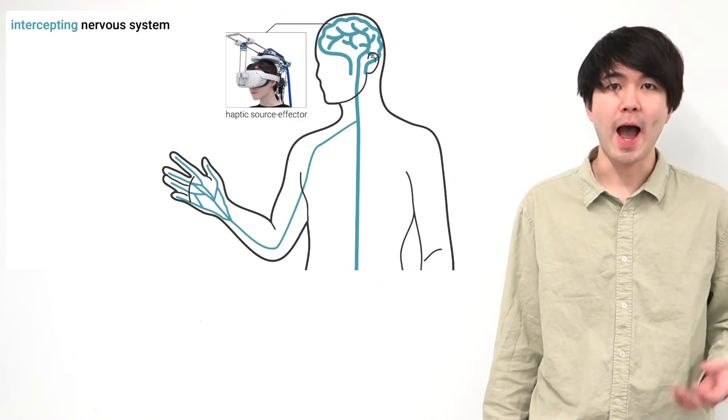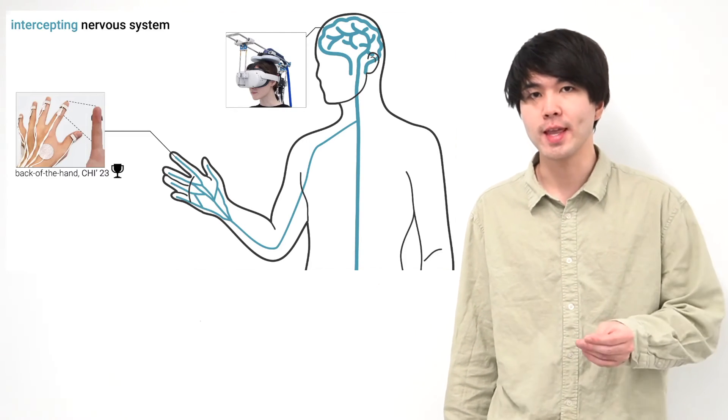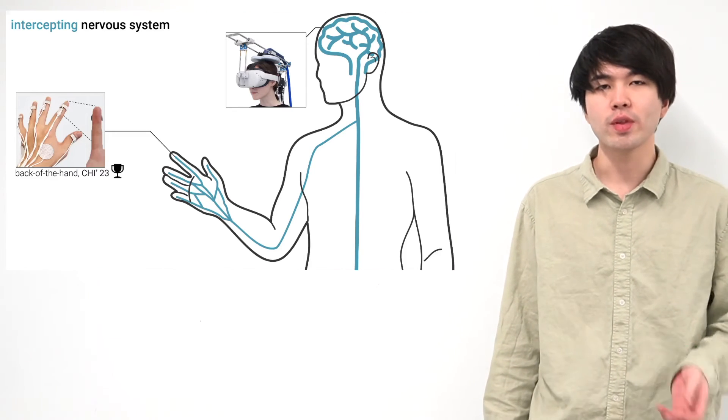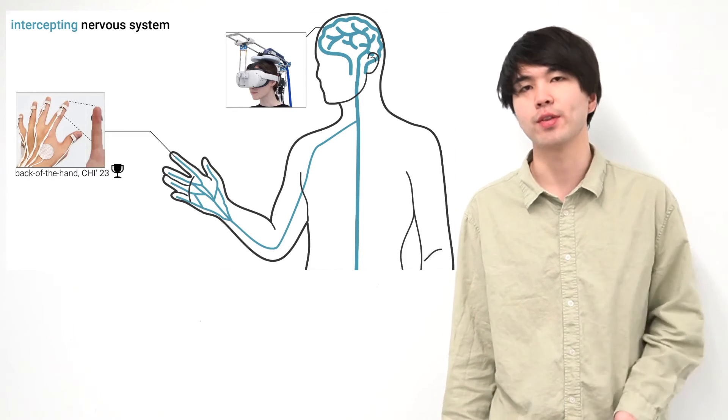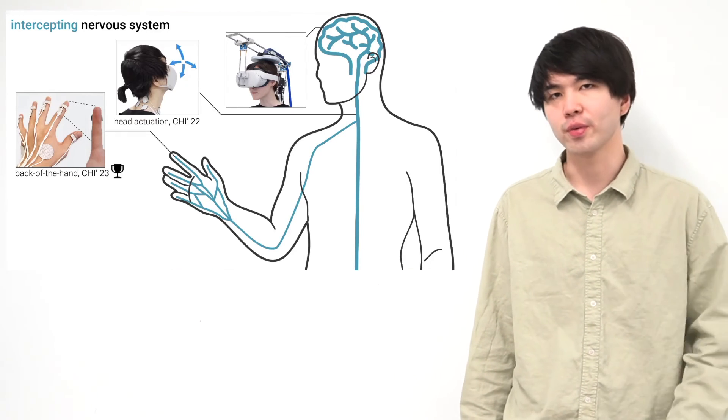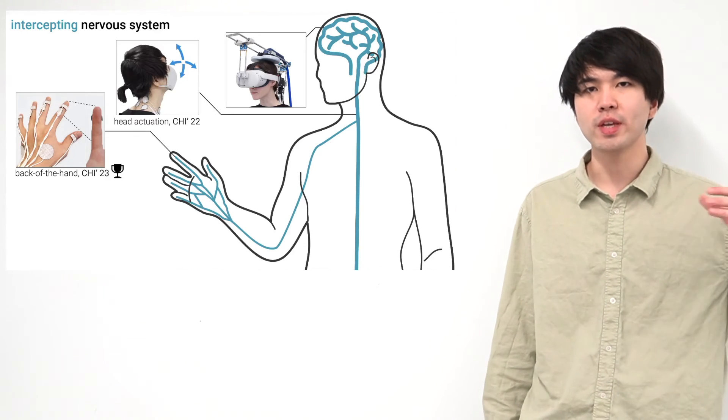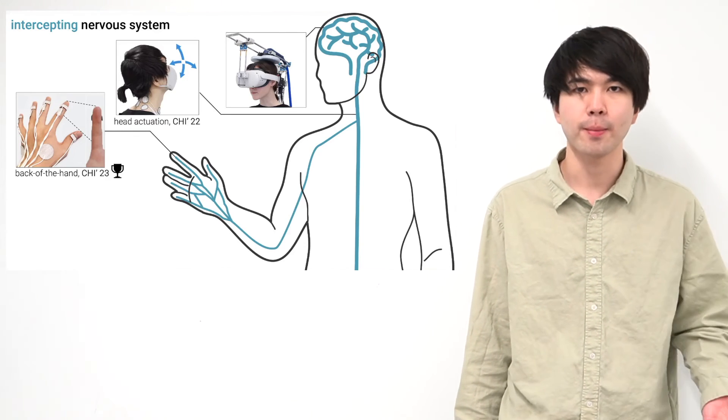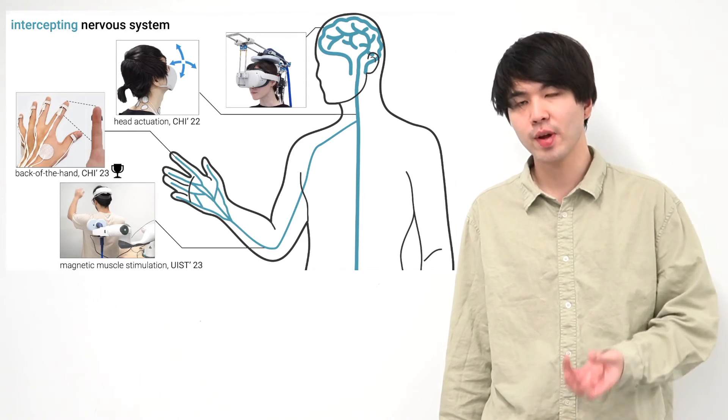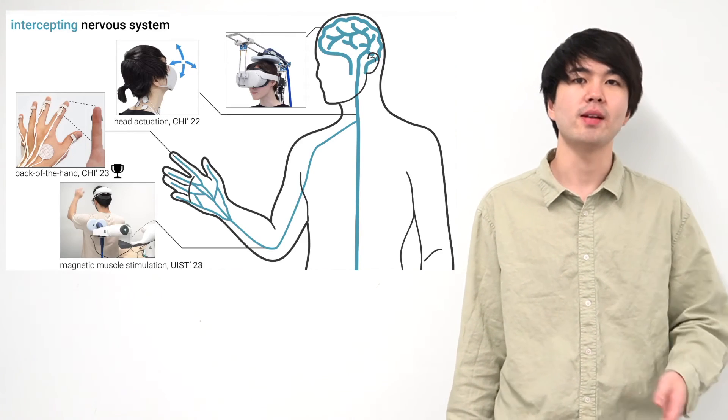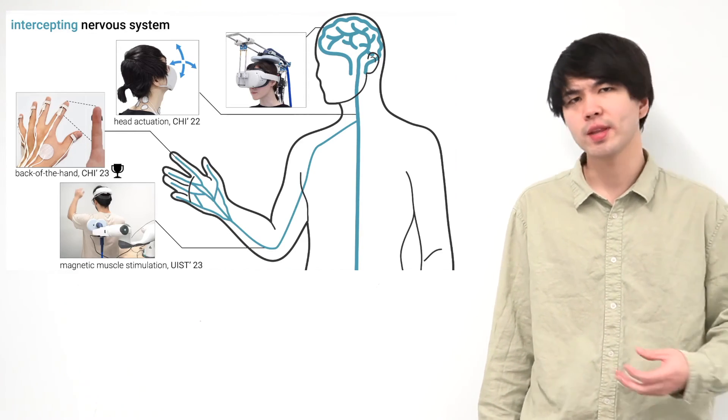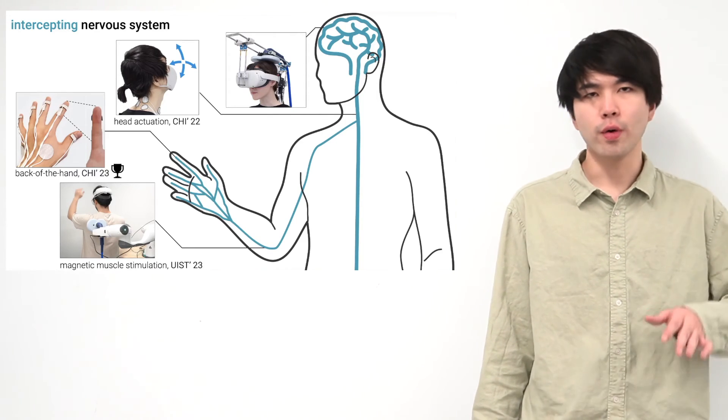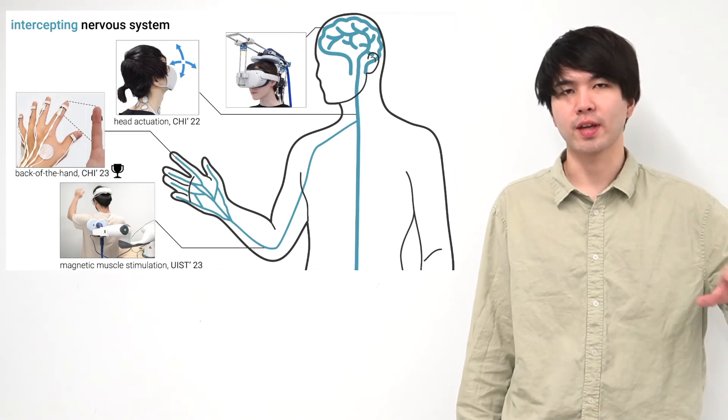Haptic Source Effector is also the latest and most extreme version of my vision for intercepting the nervous system. For instance, previously I created touch sensations in the user's fingers and palm by only having the device on the back of the hand, which I presented last year in CHI 23. Or my CHI paper from 22 presented our approach to move the user's head without any robotic instrumentation on their head. Or with my magnetic muscle stimulation, which I presented in last year's UIST, you can stimulate the muscle without wearing anything on the muscle.